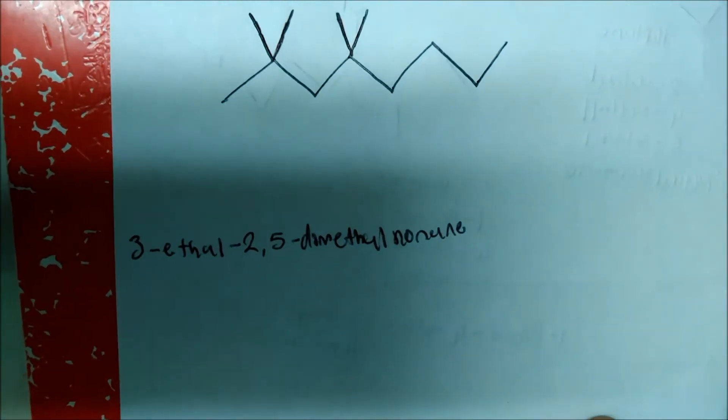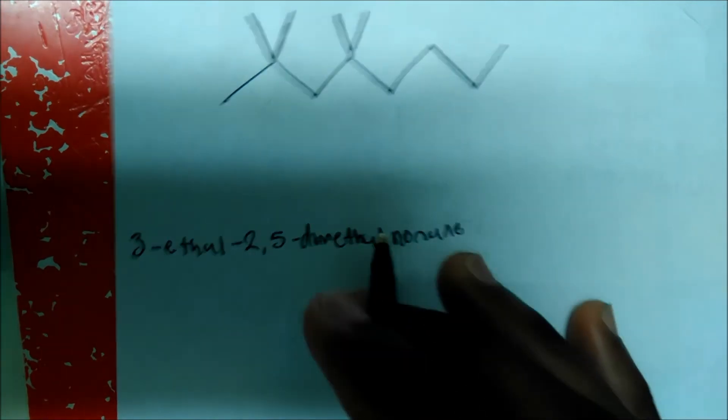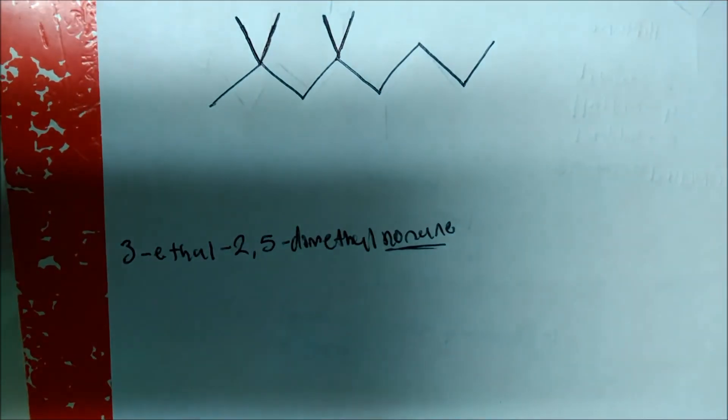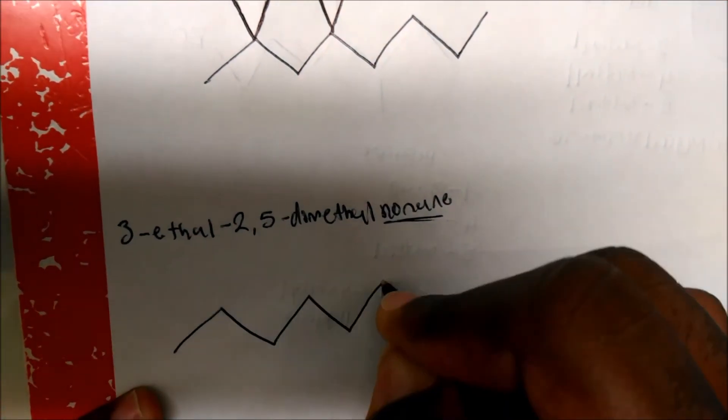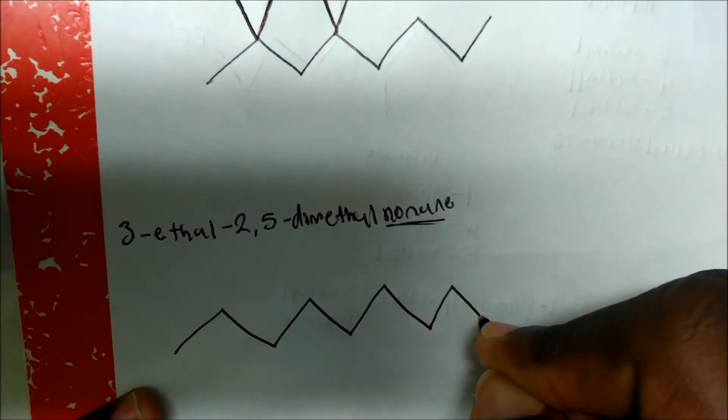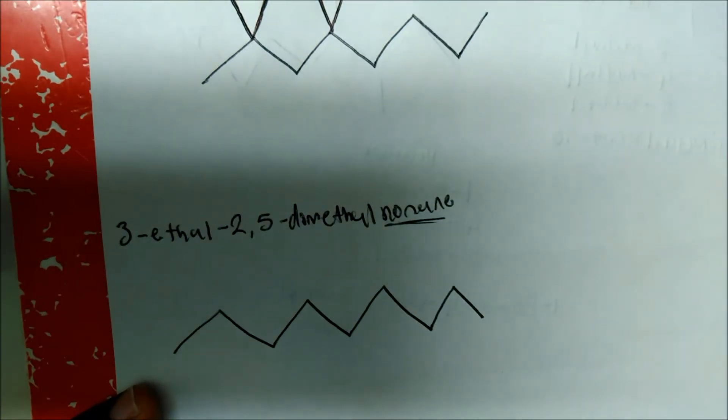How about this one? 3-ethyl-2,5-dimethyl-nonane. Again, nonane is just nine carbons. So that's the first thing we're going to do, the parent chain. So 2, 3, 4, 5, 6, 7, 8, 9. That will be nine carbons.